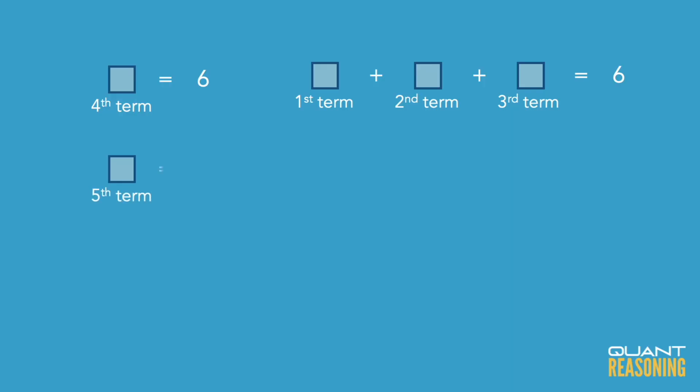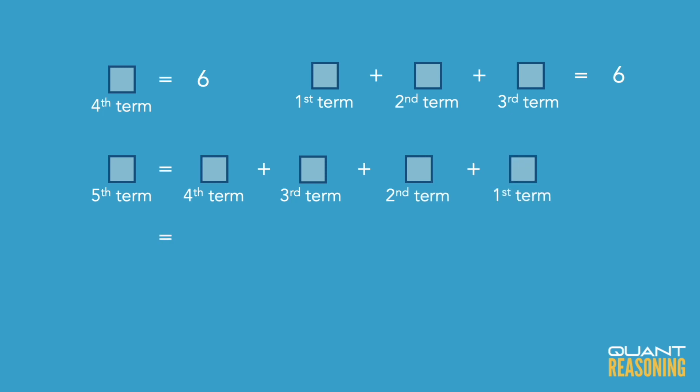We know the value of the fourth term is six, we know the sum of the first three terms is also six, and we know that the fifth term will be the sum of all of the preceding terms. So you had six from the first three, another six from the fourth one, for a total of 12. So the answer to this data sufficiency question is yes, the fifth term is 12. But more importantly, for our purposes, the answer is D.